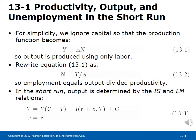In the short run, output is determined by the IS and LM relations, as shown by equation 13.3. The IS relation shows output depends on demand, which is the sum of consumption, investment, and government spending. Consumption depends on disposable income. Investment depends on the borrowing rate equal to the policy rate plus a risk premium, and on sales. Government spending is given. The LM relation says that the central bank determines the policy rate R.